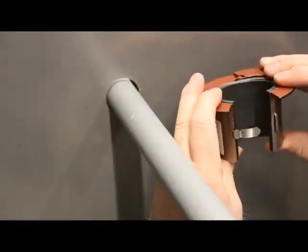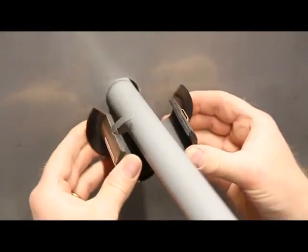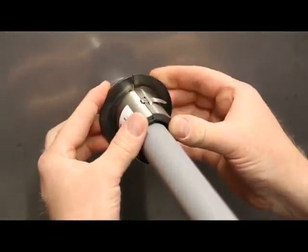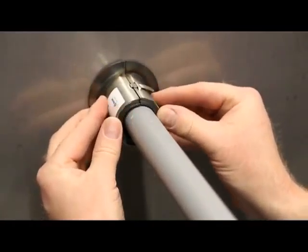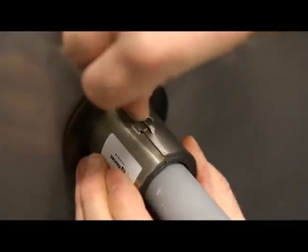Open the fire penetration seal, sliding one half over the other. Wrap the fire penetration seal around the pipe. Close the fire penetration seal and lock it.